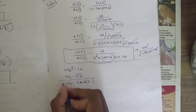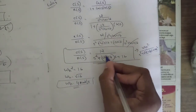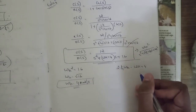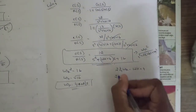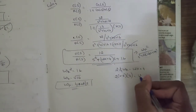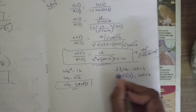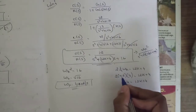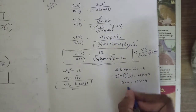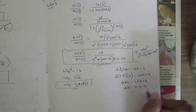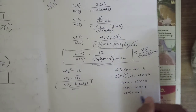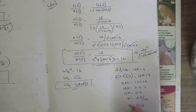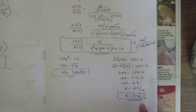From the standard form, 2ζωn = 12K + 4. Substituting ζ = 0.8 and ωn = 4: 2 × 0.8 × 4 = 6.4 = 12K + 4. So 12K = 6.4 − 4 = 2.4, therefore K = 2.4/12 = 0.2. This is the value of K.